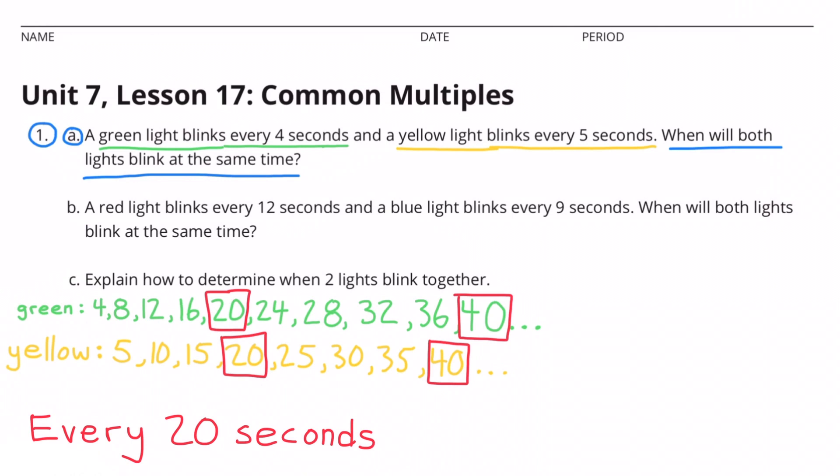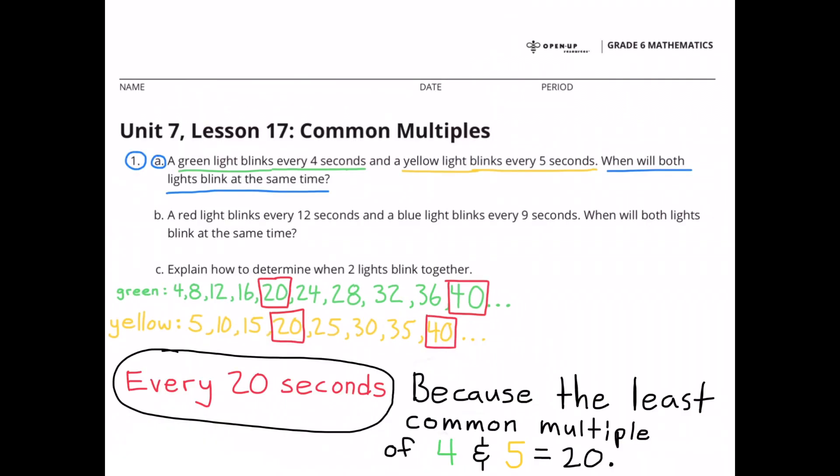The green light and the yellow light will blink at the same time every 20 seconds: 20 seconds, 40 seconds, 60 seconds, and so on. And that's because the least common multiple of 4 and 5 is 20.